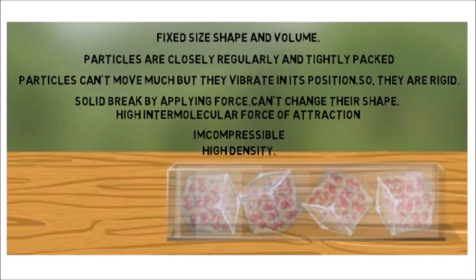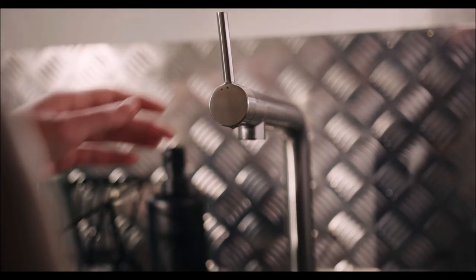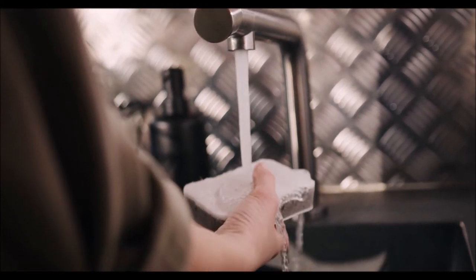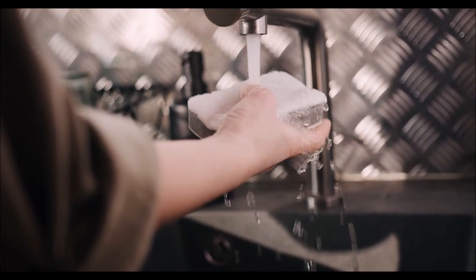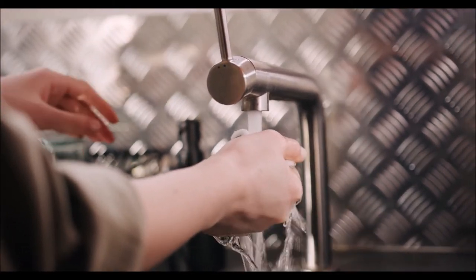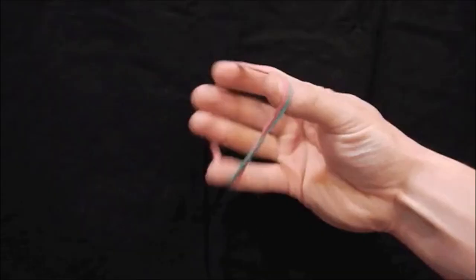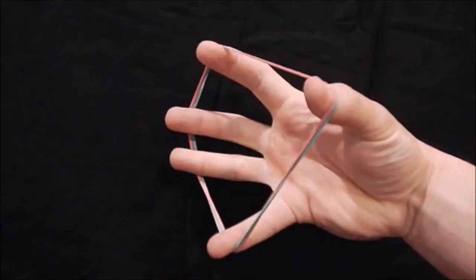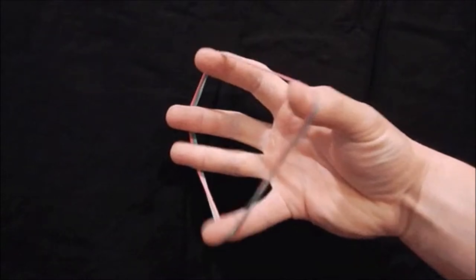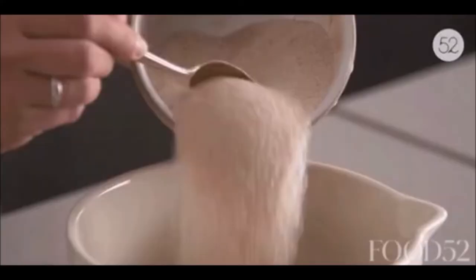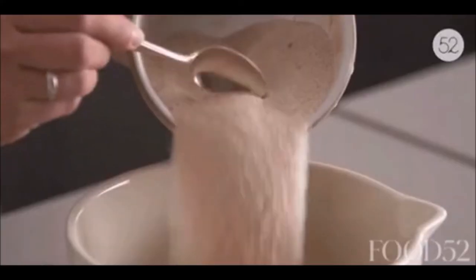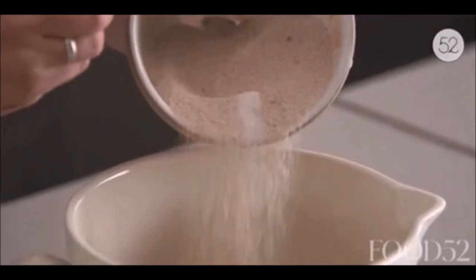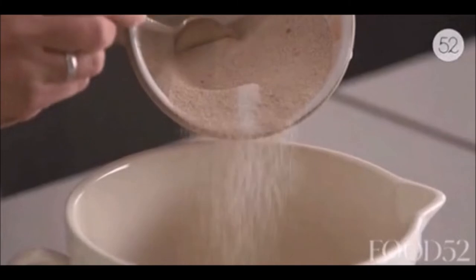Exception 1: Sponge. Being a solid, it is compressible because it has minute holes in which air is trapped. When we press it, air expels out so we can compress it. Exception 2: Rubber. Rubber changes shape under force and regains its shape when force is removed. Exception 3: Sugar and salt take up the volume of a container, but they are still considered solids because the shape of each individual crystal remains fixed inside the container.